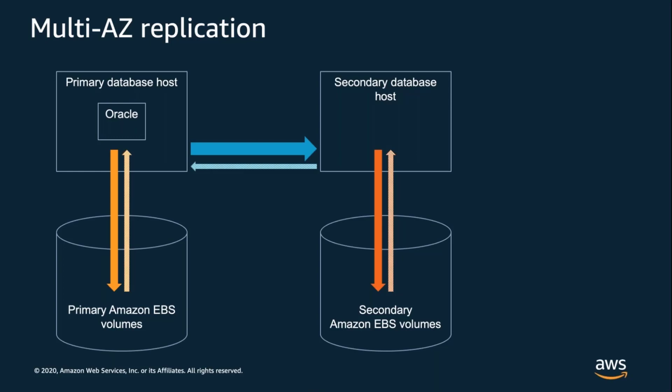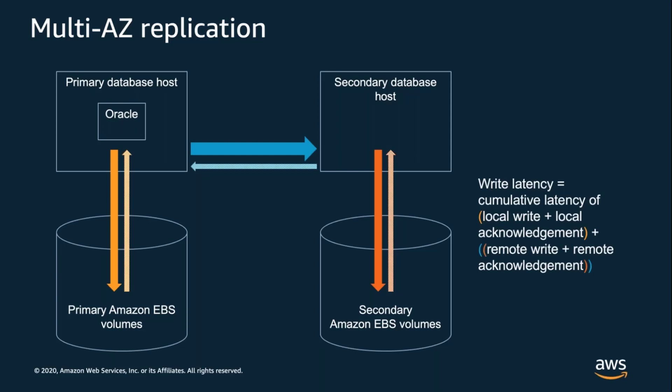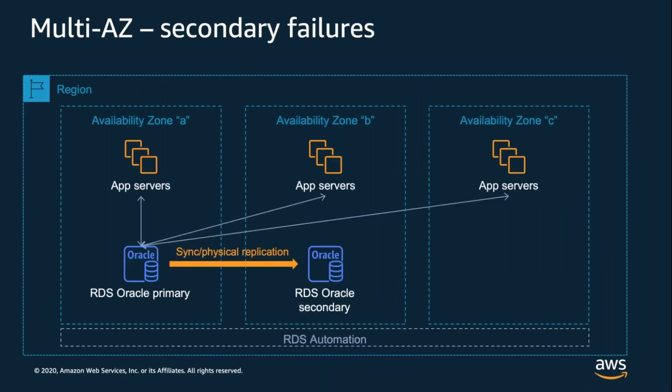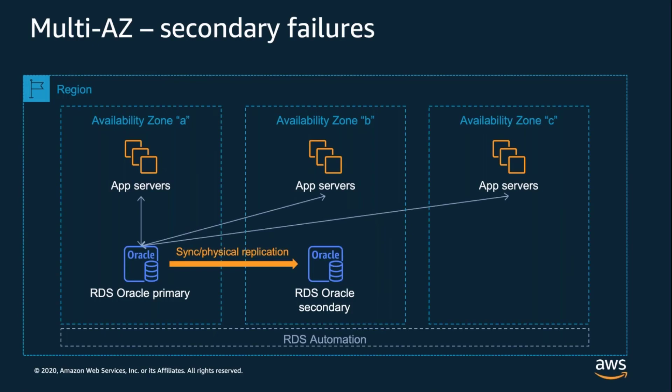When Oracle writes to disk it waits for the storage system to acknowledge the write before responding back to the session that its changes have been made durable. With multi-AZ, the storage layer transparently replicates the change to the secondary instance and only acknowledges the write after it's been sent to storage and acknowledged on both sides. Because AZs are relatively close together we can do this synchronously to reduce the risk of data loss. It can increase write latency by a small amount, but most customers find this to be a reasonable trade-off. Note that the secondary does not host a running database instance, so you can't connect to it for read scaling, but in Oracle it does need to be licensed.